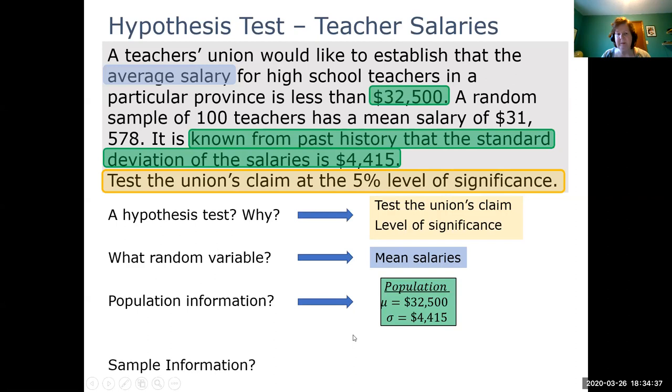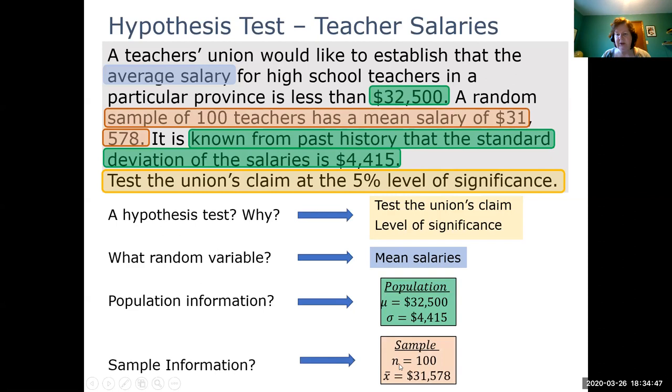Finally, we're going to look for our sample information. Here we find our keyword for sample. Sample of 100 teachers, mean salary of $31,578. So that's our sample information. n is 100 and x-bar is $31,578. Remember, if we have a mean value mentioned in the same sentence as something that says sample, this is going to be our sample mean.